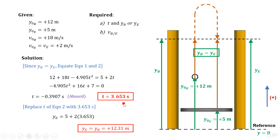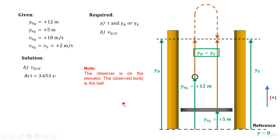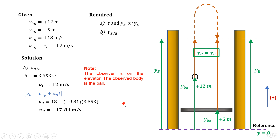Let's proceed now with the last question. We are now required to solve for relative velocity of the ball with respect to the elevator at the time that they collide. In this problem, take note that the observer is on the elevator while the observed body is the ball. At 3.653 seconds, we know that velocity of the elevator is still the same. To solve now for the velocity of the ball at this instant, let's use the second kinematic formula. By substitution, we will get its velocity equal to negative 17.84 meters per second. The negative sign indicates that upon collision, the ball is already moving downward, which means that it had attained its maximum height and then fell back.